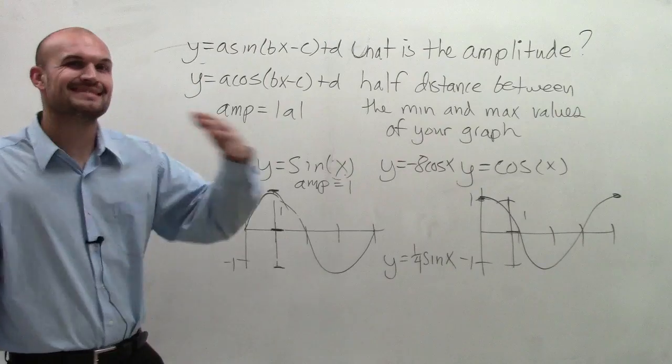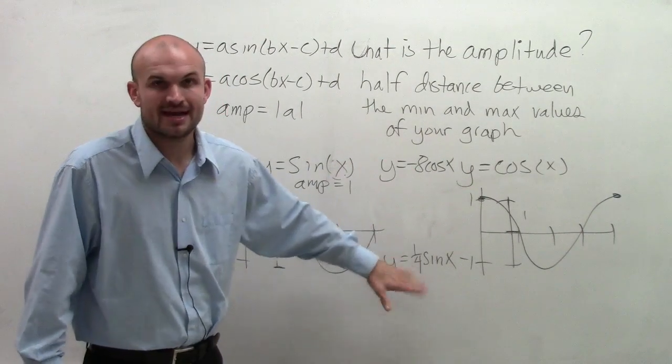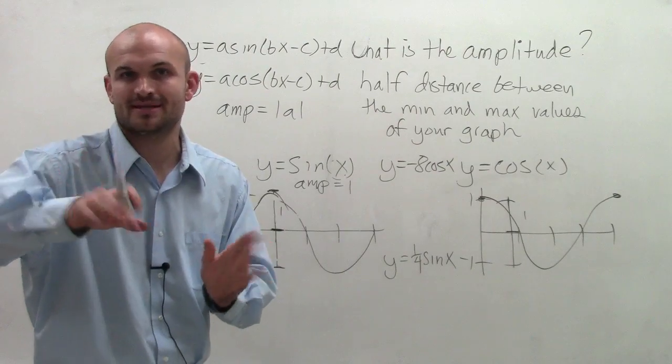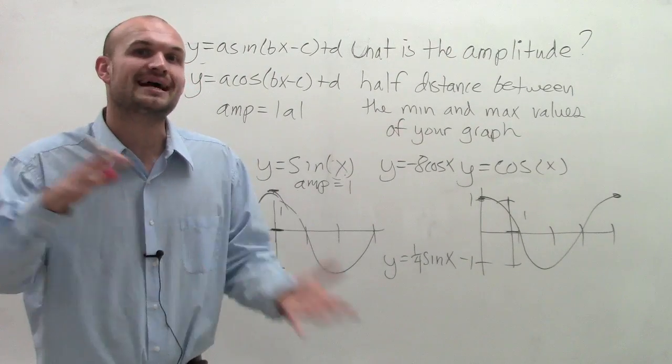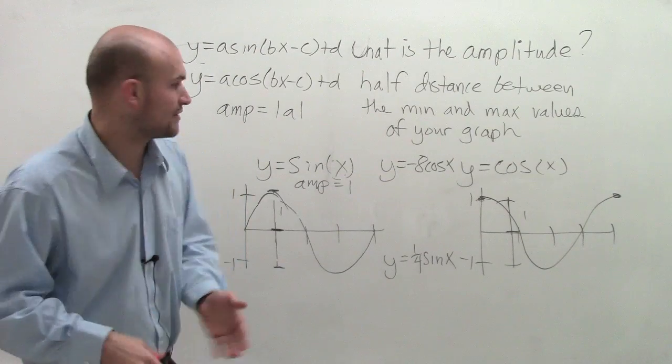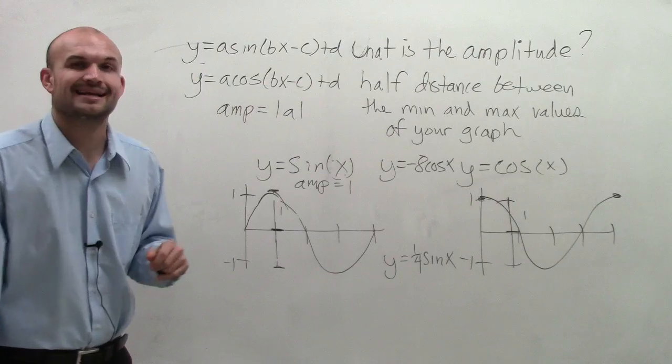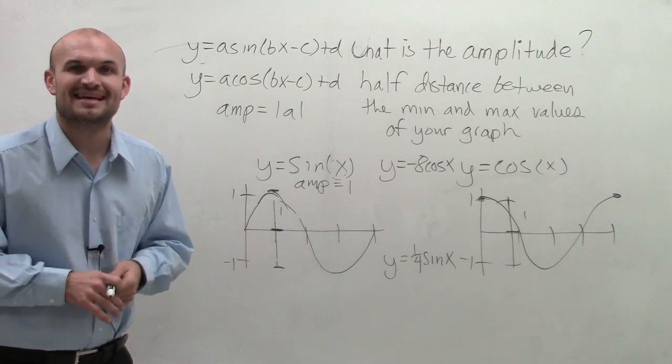And to make sure that you understand that it's the absolute value, because there will be times that we're going to have a negative. And what that negative is going to do, we'll talk about that later, it's going to be a reflector graph. But it's not going to change the distance between the maximum and the minimum of the graph. So the amplitude is going to be your absolute value of a when dealing with your sine and cosine graph. There you go. Thanks.